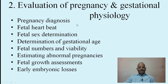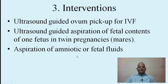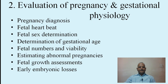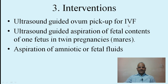Evaluation of pregnancy and gestational physiology is the most important use of ultrasound in animal reproduction. You can visualize fetal heartbeat, detect fetal sex, determine gestational age, fetal numbers and their viability, estimate normal fetal growth, assess early embryonic losses. For interventions, ultrasound-guided ovum pickup for in vitro fertilization, ultrasound-guided aspiration of fetal contents in twin pregnancies in mares to reduce twins, and aspiration of amniotic or fetal fluids for studies or pathological conditions are all possible.